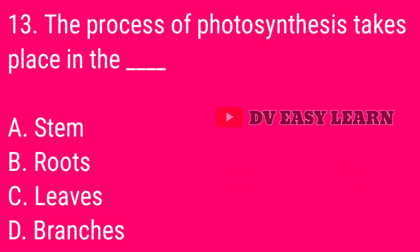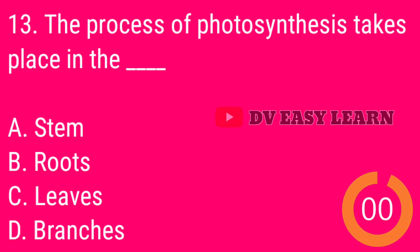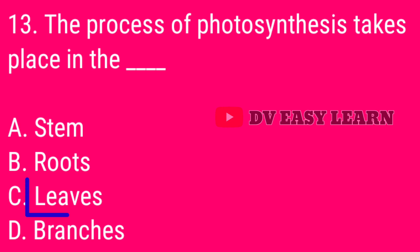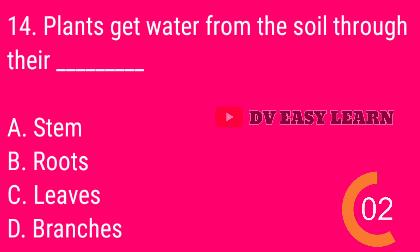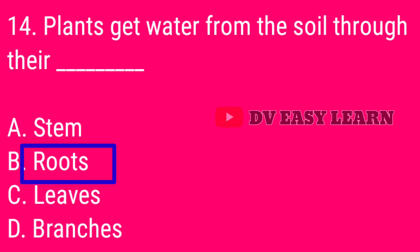Question 13. The process of photosynthesis takes place in the leaves. Question 14. Plants get water from the soil through their roots.